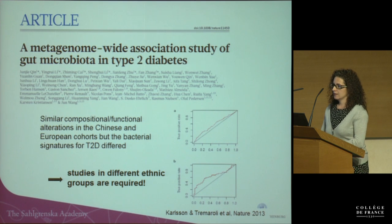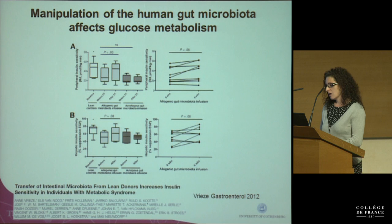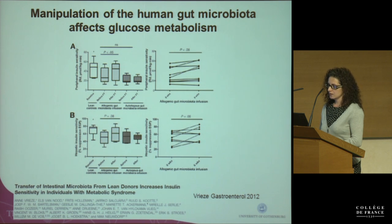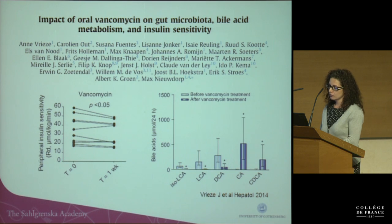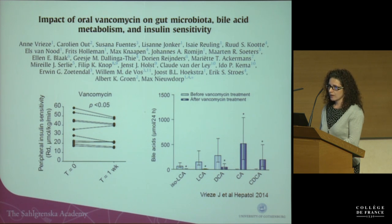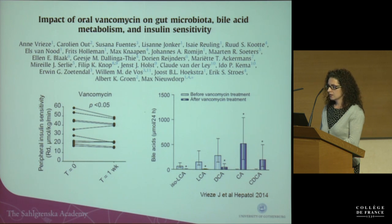These studies are still associations, but there is some evidence in humans that the microbiota actually affects glucose metabolism. In a study from the Netherlands, fecal microbiota was transferred and there was an improvement in peripheral insulin sensitivity. Another study from the same group showed that modification of the gut microbiota by antibiotic treatment — specifically vancomycin — resulted in decreased insulin sensitivity. There was also a shift in bile acid profile: a decrease in secondary bile acids and an increase in primary bile acids.